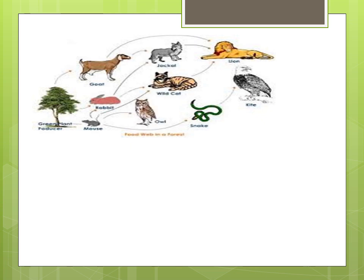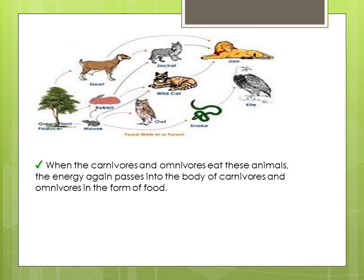Now take a look at the diagram. When the carnivores or omnivores eat these animals, the energy again passes into the body of the carnivores or omnivores in the form of food. Carnivores are those animals which mostly survive on herbivores animals, while omnivores are those animals which depend on plants as well as on other animals for their food.